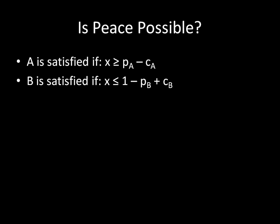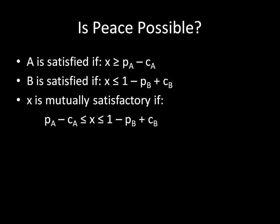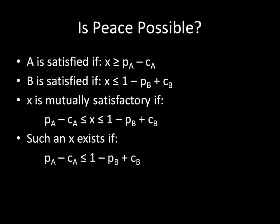So the question is: is peace possible? A is satisfied if X ≥ PA − CA, and B is satisfied if X ≤ 1 − PB + CB. We can string these inequalities together: a mutually satisfactory X exists if PA − CA ≤ X ≤ 1 − PB + CB. Such an X will exist as long as there's space between PA − CA and 1 − PB + CB — that is, as long as PA − CA ≤ 1 − PB + CB.